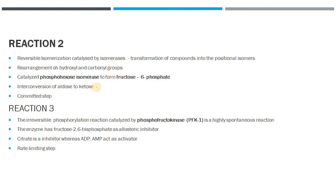The next step is isomerization catalyzed by phosphohexose isomerase, converting glucose-6-phosphate to fructose-6-phosphate. This is a very important step because once the substrate has entered this step there is no turning back — glycolysis will continue. Here an aldose has been converted to a ketose.